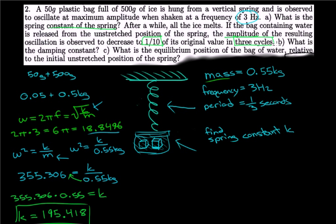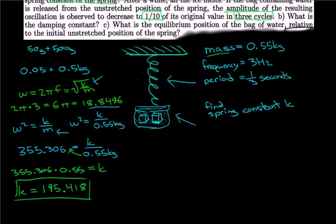Well, we know each cycle is the period, so the new amplitude is one-tenth. So 1/10 of A is equal to the old amplitude times e to the negative B times, and since this is three cycles, we're doing three times T, or three times the period, so 3T.